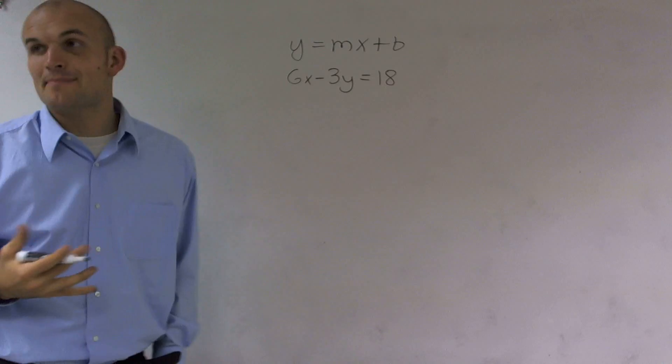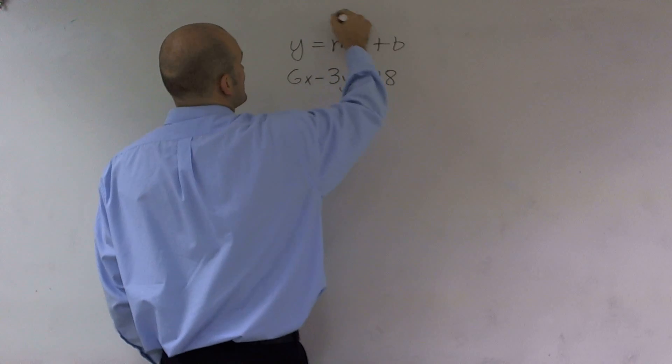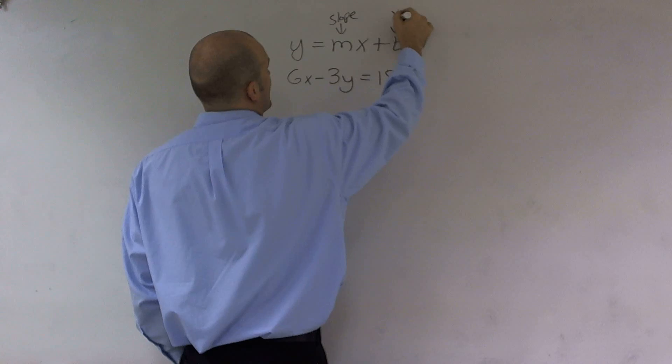Slope intercept form is y equals mx plus b, where m is your slope, and b is your y-intercept.